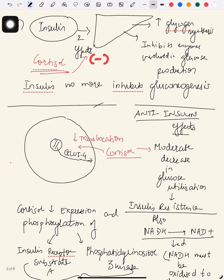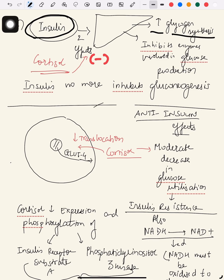Since there are more amino acids in the liver, a greater amount of glucose can be formed. So amino acid mobilization from muscle increases because of cortisol. Now let's see what happens in terms of insulin — we are still studying the effects of cortisol on carbohydrate metabolism.